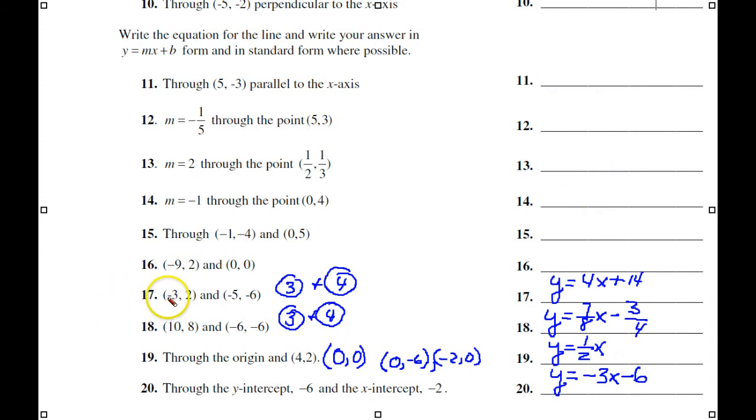Now, for number 17, here we have two ordered pairs. We're going to have to use the slope formula. And by the way, the slope comes out to be 4. And then we use formula 4, the point-slope form. Use either one of these pairs. And that'll bring you to this. To put it in standard form, you bring this over to the other side.